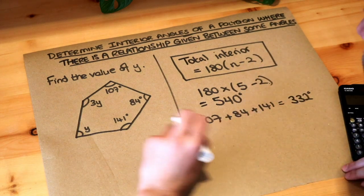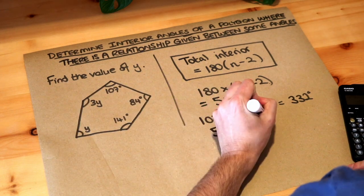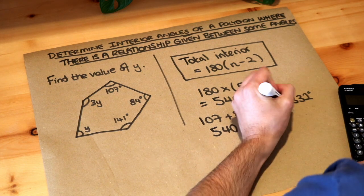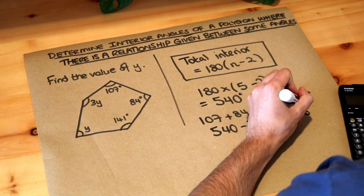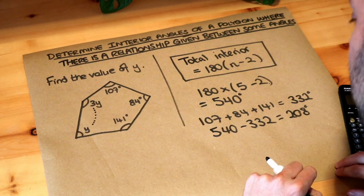So that means the remaining angle for these two here is 540 minus 332, and that gives you 208 degrees. So the sum of these two angles, these two angles that are left, is 208 degrees.